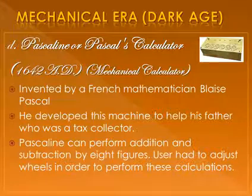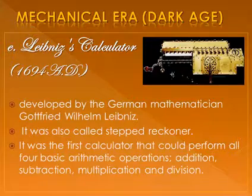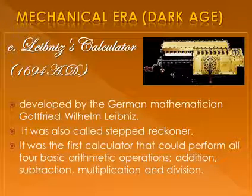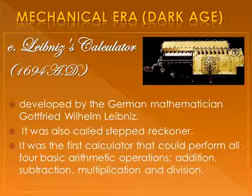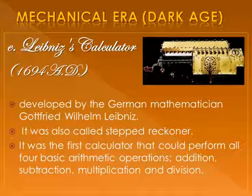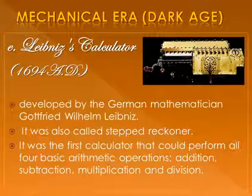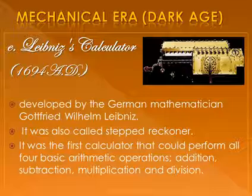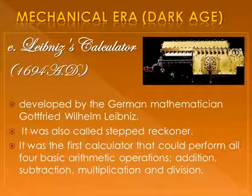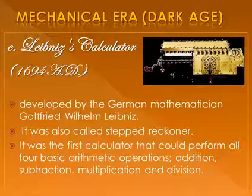The next machine is the Leibniz Calculator, developed by German mathematician Gottfried Leibniz. It was called the Stepped Reckoner. It was the first calculator that could perform all four arithmetic operations: addition, subtraction, multiplication, and division.